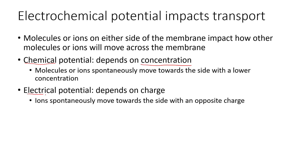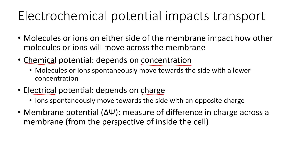The second component is electrical potential, which depends on charge. The spontaneous movement from an electrical potential standpoint applies specifically to ions, which spontaneously move toward the side that has an opposite charge, as this is more favorable. Combining these two components gives us the electrochemical potential. We can also talk about the membrane potential, which is a measurable quantity representing the difference in charge across a membrane, always expressed from the perspective of the inside of the cell. For example, if there is a negatively charged environment inside the cell, we say that cell has a negative membrane potential.